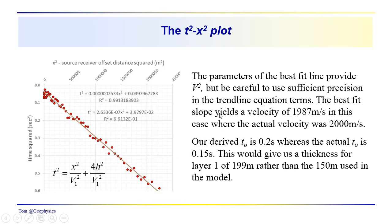Doing that with the horizontal layer case, the best fit slope here yields a velocity of 1,987 meters, very close to the actual velocity of 2,000 meters per second.